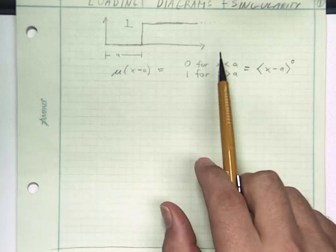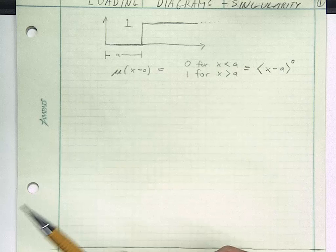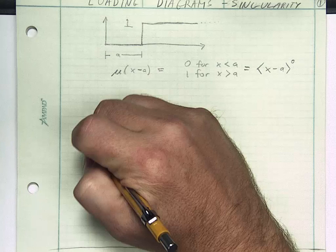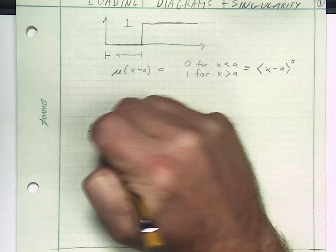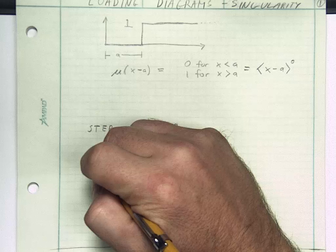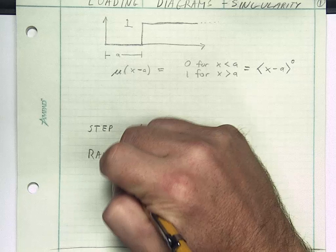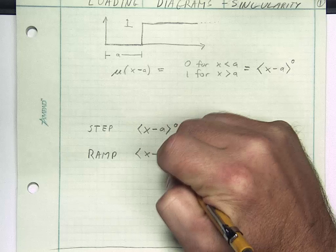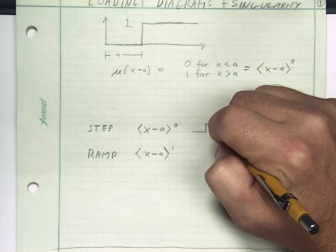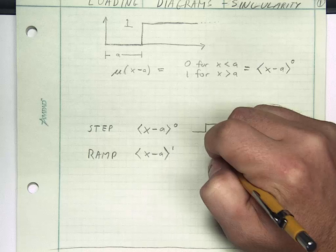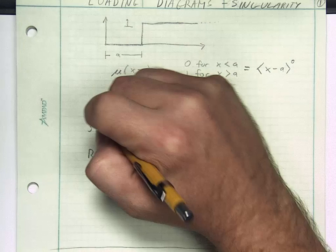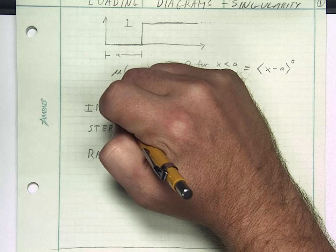It turns out that this is not the only function around. There are other singularity functions besides the step. I'm going to start with the step here, we'll put it kind of in the middle. And again we're going to denote that as x minus a raised to the zeroth power. I'm going to talk about a ramp function now, and we'll say that this is x minus a to the first power.